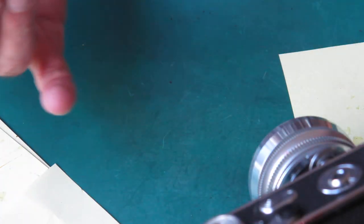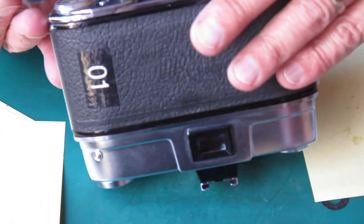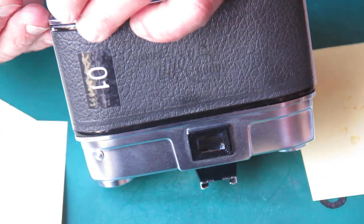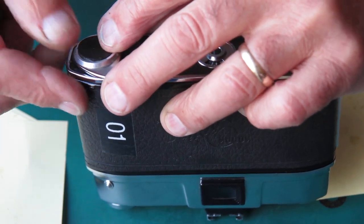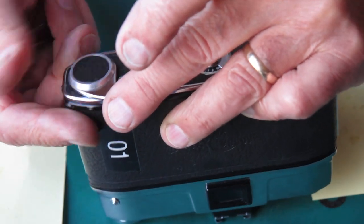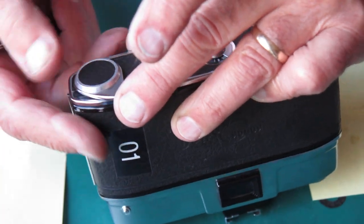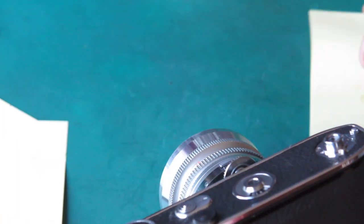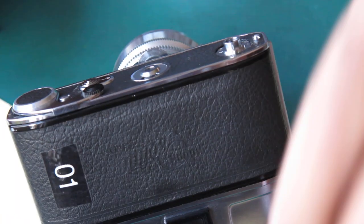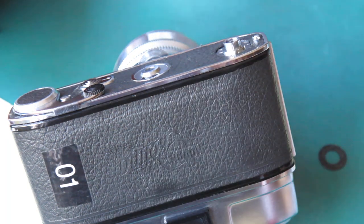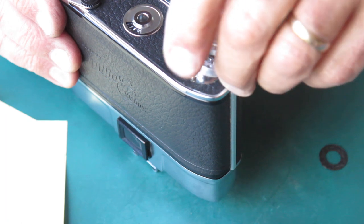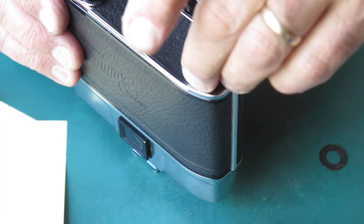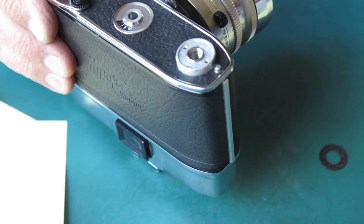And putting that on the advance lever. The leatherette does have a grain. You need to match this up so that the grain runs parallel. Well, you don't need to, but it makes for a neater job. That only leaves the tripod socket surround. In this case, the surround goes over the top of the leatherette.